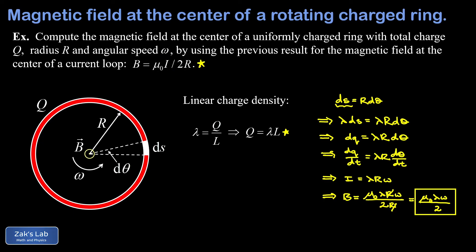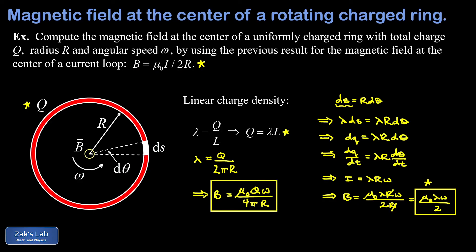That result, B = mu-naught·lambda·omega/2, is a useful form, so it's worth boxing. But since our problem gave us the total charge Q on the ring, we should write our final answer in terms of Q instead of lambda. Lambda is just the total charge on the ring divided by the circumference, so lambda = Q/(2·pi·R). Replacing lambda in our expression gives B = mu-naught·Q·omega over 4·pi·R. That's our final answer.